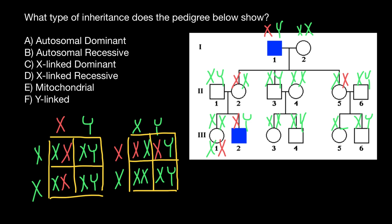So we can explain what we see here with variant D: X-linked recessive genetic disorder. Why is it not dominant? Because in that case, the X chromosome inherited by this female would cause her to also manifest the genetic disorder and be affected — but that is not what we see here. So it can only be X-linked recessive, and the whole pattern of this pedigree proves our suggestion. That's all for today — subscribe and see you in the next video. Goodbye.